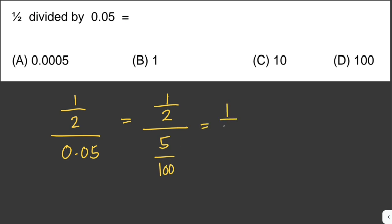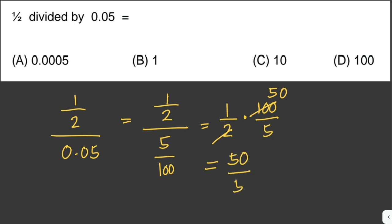We change the sign and flip the denominator, so this is 1/2 times 100 over 5. Since 100 is divisible by 2, this simplifies to 50. Then we have 50 over 5, and 50 divided by 5 is equal to 10. So the answer here is letter C.